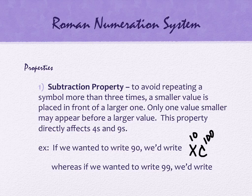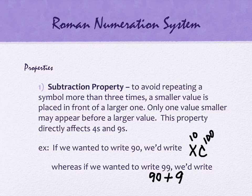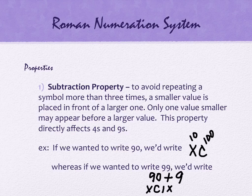So if we wanted the number 99, it would be nice if we could write IC, but we can't. They almost think about it as writing 90 plus 9. How do I write 90? That's XC. How do I write 9? That's IX — X is worth 10, and I put 1 before it to get 9. So anytime you see 4 or 9 in a number, that's when you'll see the subtraction property. But it really only affects 4s and 9s.